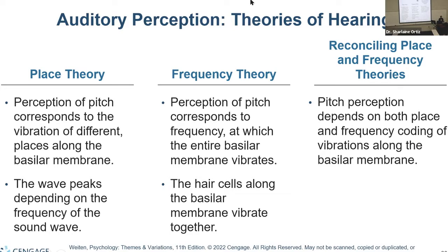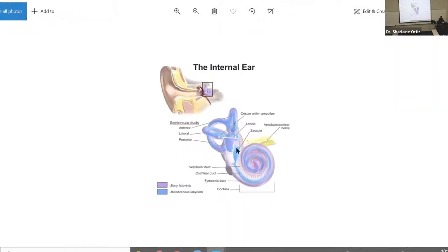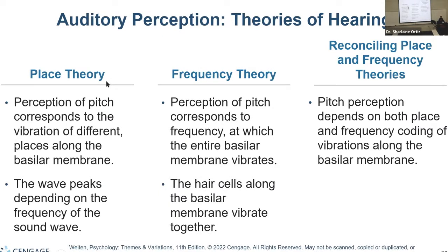There are multiple ways to understand the perception of pitch. We have place theory, where the perception of pitch corresponds to where the vibration occurs in different parts of the basilar membrane. Depending on which section of the cochlea that vibration is occurring in, it generates a different form of pitch.